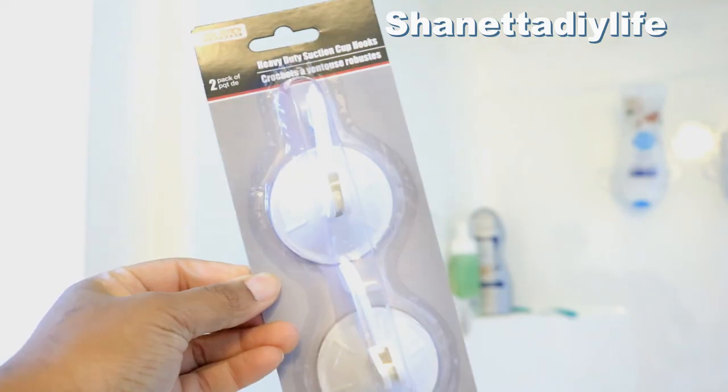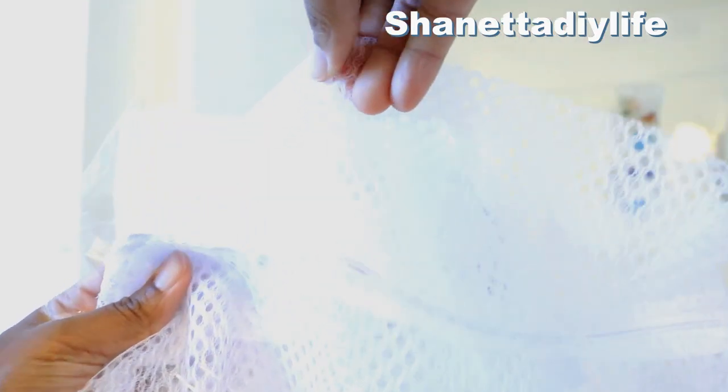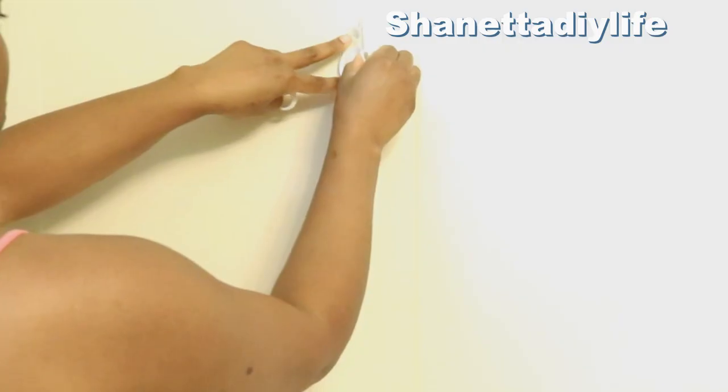This next storage option is for everything else you need while showering that typically doesn't have a place. I'm using Dollar Tree heavy-duty hooks and laundry mesh bags that are perfect—they can go in the washing machine and dryer.